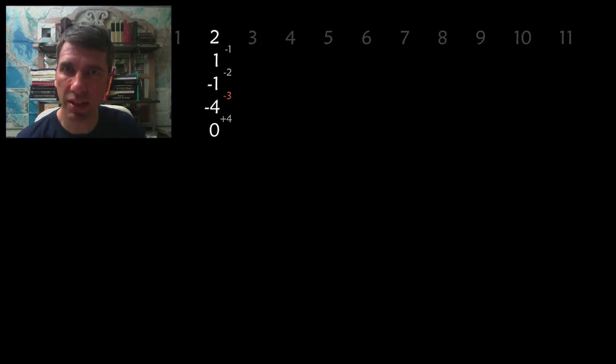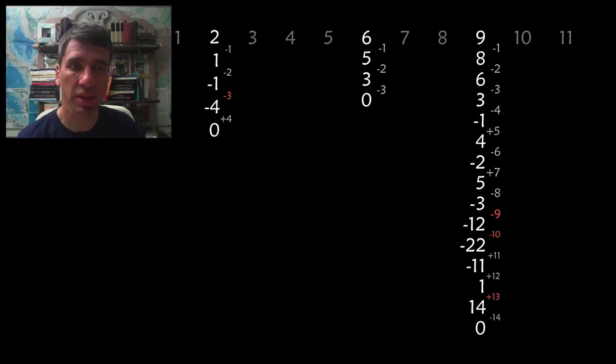We can choose any integer to start. So for example, if we start with the integer six, then that's going to be six, five, three, and zero. We're all integers are that fast. If we start with nine, for example, that is the list that we have to do.